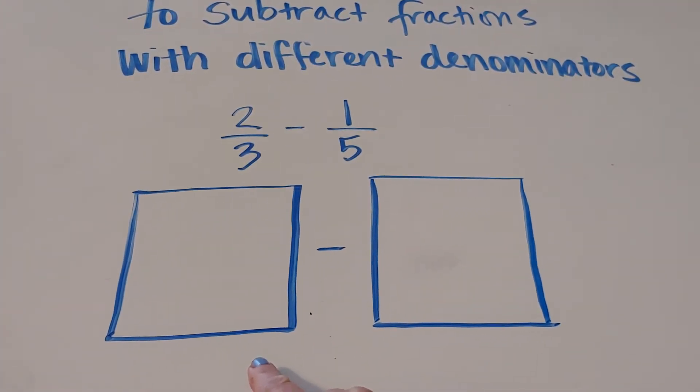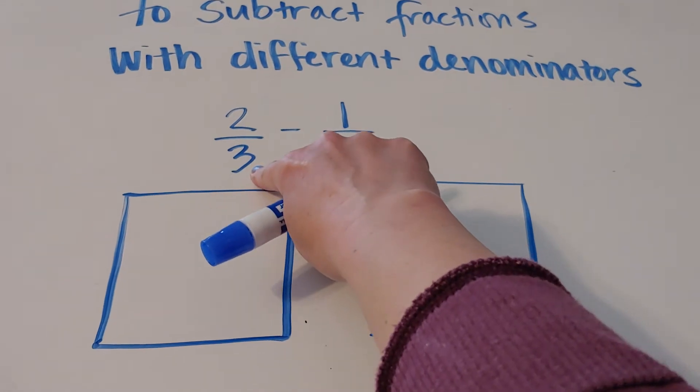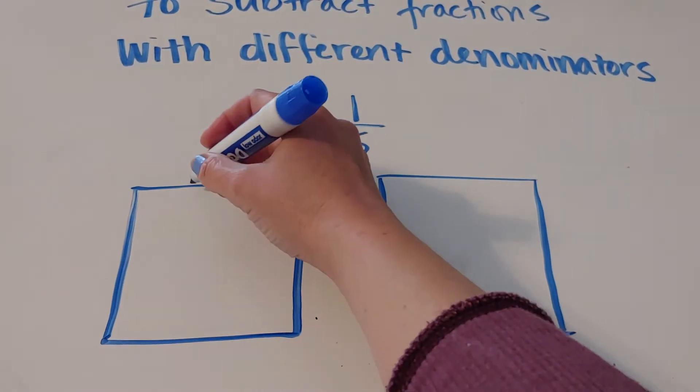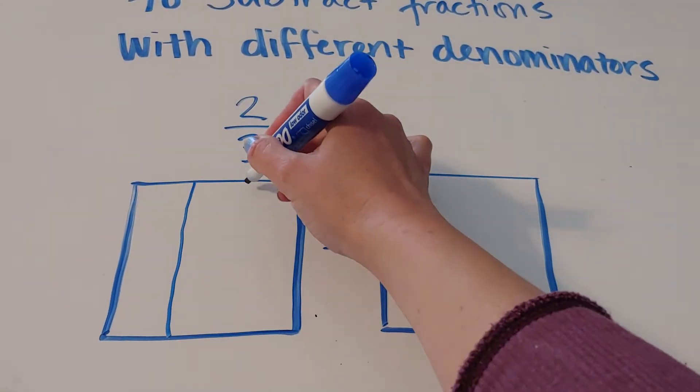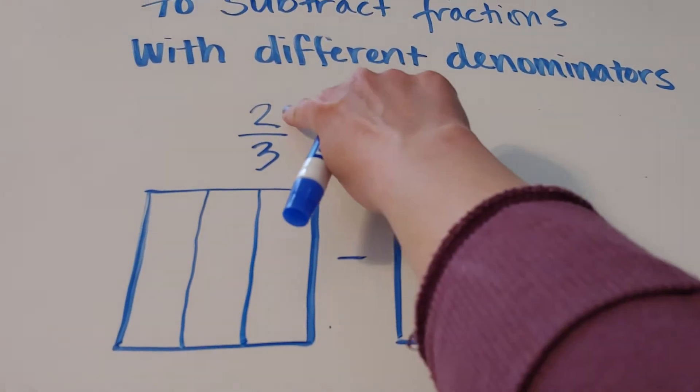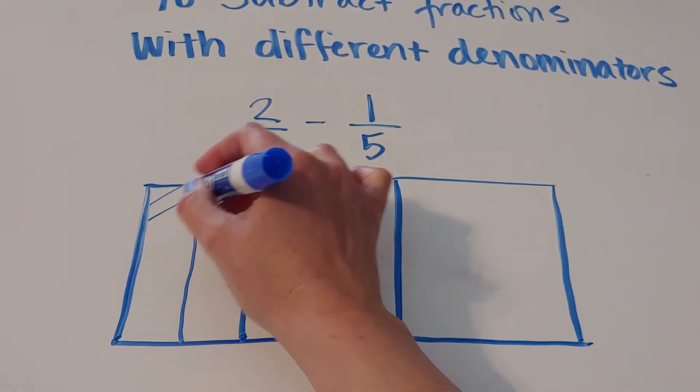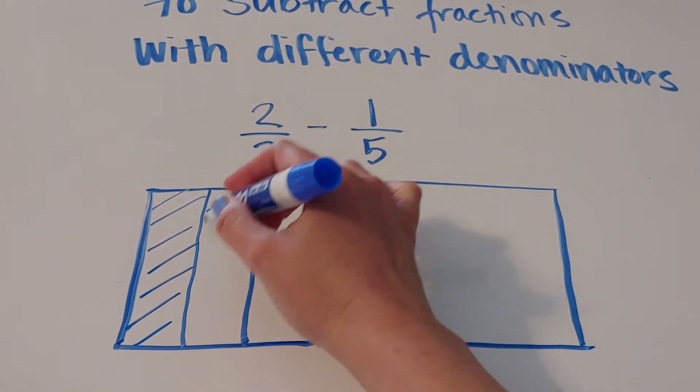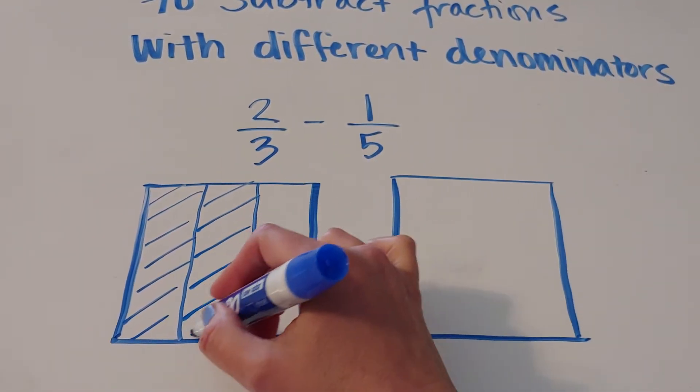So as we did in the last video, what we're going to do is this first denominator is a three, so we're going to do three vertical lines. Because the top is two, we're going to shade two. So there is two thirds.